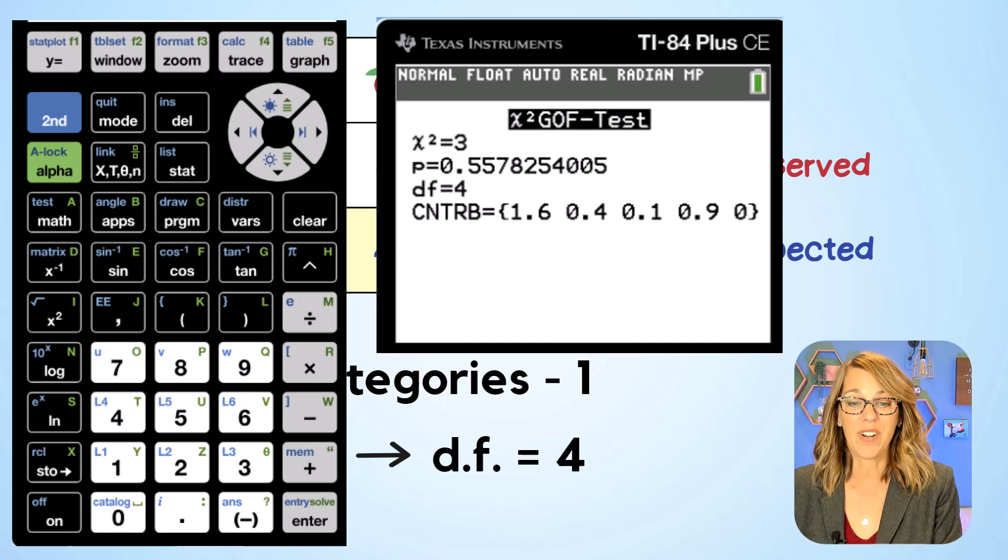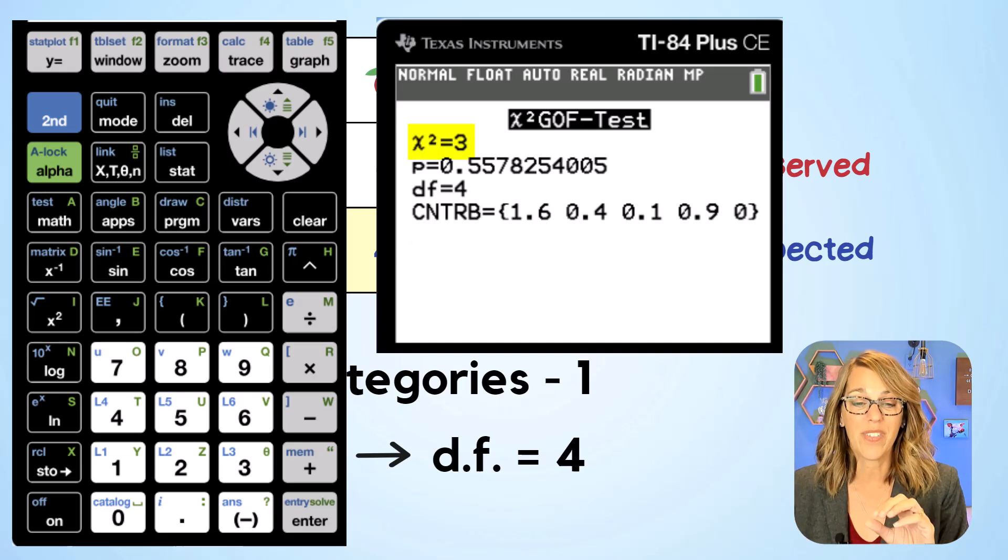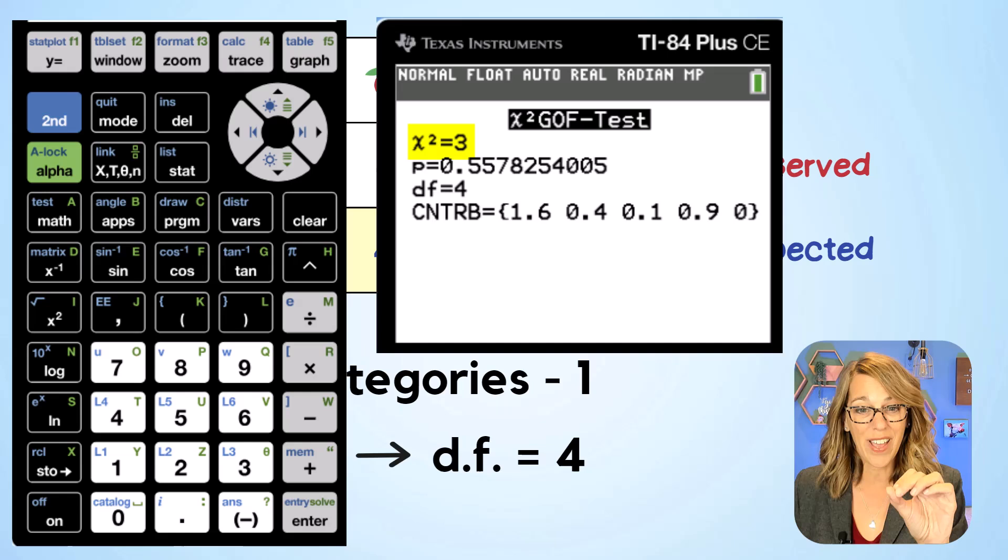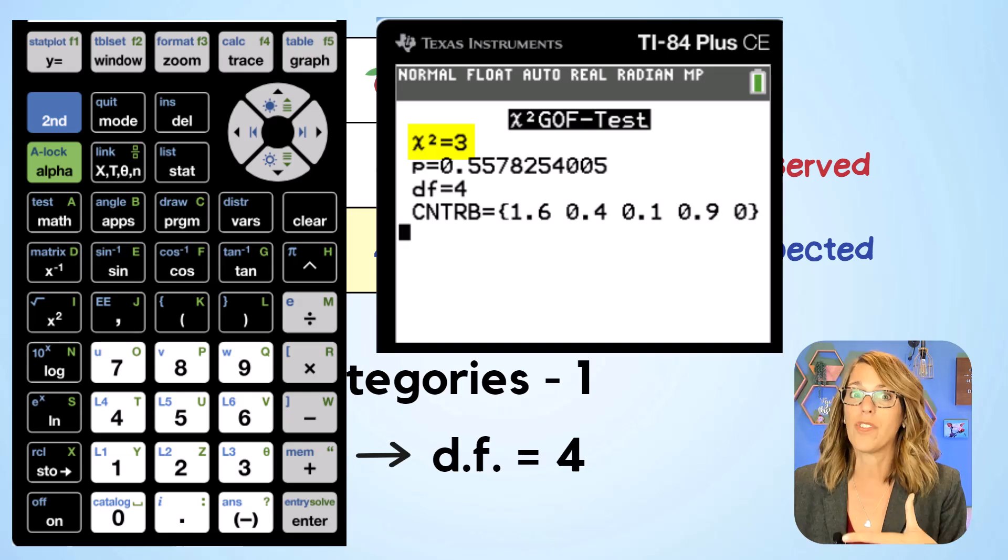And it gives me the values that I'm looking for. So it's giving me that chi-square value there of three. That's my test value. It gives me a p-value which is a really big p-value of 0.5578.